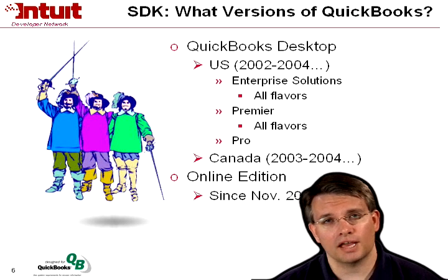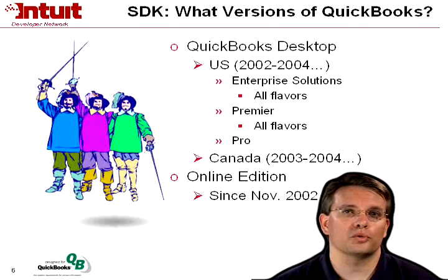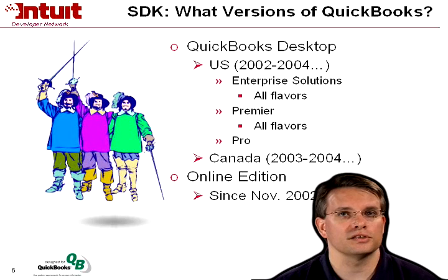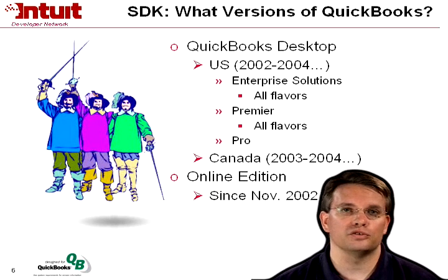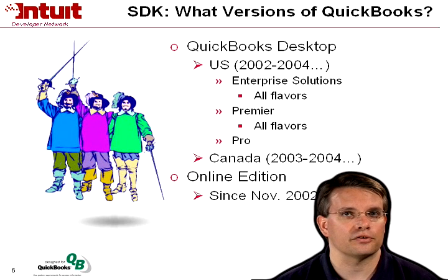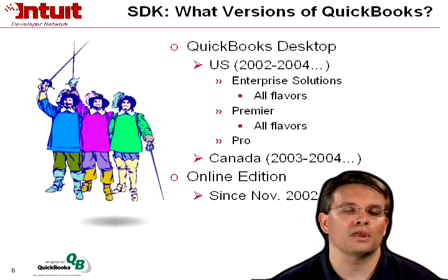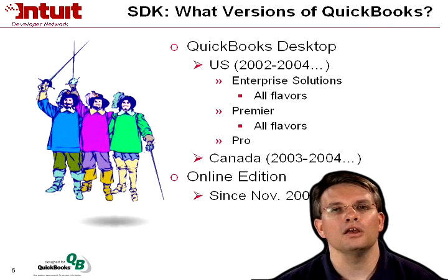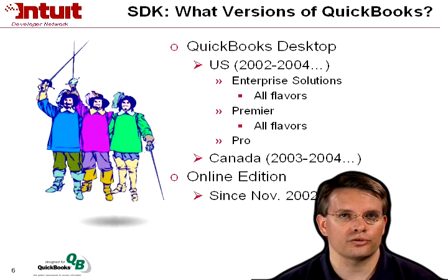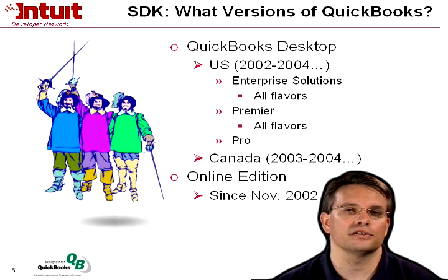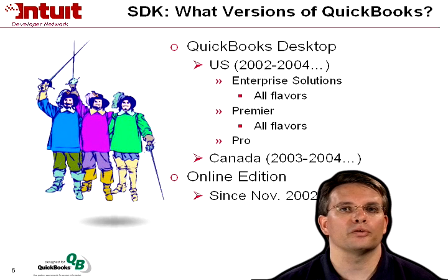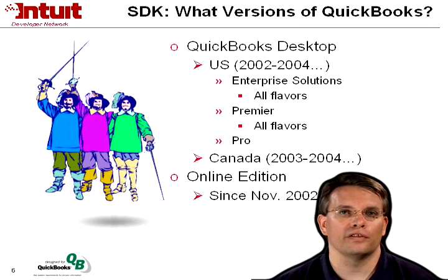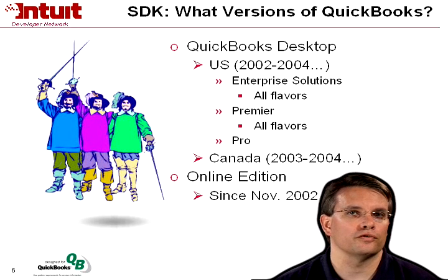So what versions of QuickBooks actually support the SDK? It was introduced with QuickBooks Desktop on the U.S. edition in 2002, and it has been supported since then — the U.S. editions 2002 through 2004. The enterprise solutions, all flavors, including manufacturing, retail, professional services, et cetera. Similarly, for QuickBooks Premier editions, all flavors, and QuickBooks Pro. In Canada, they first supported the SDK in QuickBooks 2003 with the QBXML 2.0 CA specification, and that support continues with QuickBooks 2004 with a 3.0 CA spec. And the online edition began supporting the SDK in November of 2002.